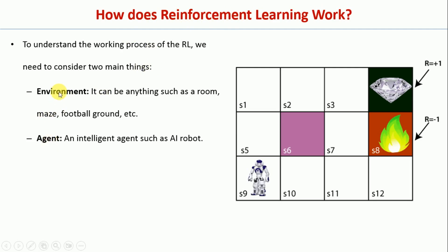The environment can be anything such as a room, maze, football ground, or anything like that. In this example I am going to consider a grid of 3x4 size, where 3 rows and 4 columns are there. The agent is an intelligent agent — you can say a robot. You can notice in the 9th cell we have a robot.